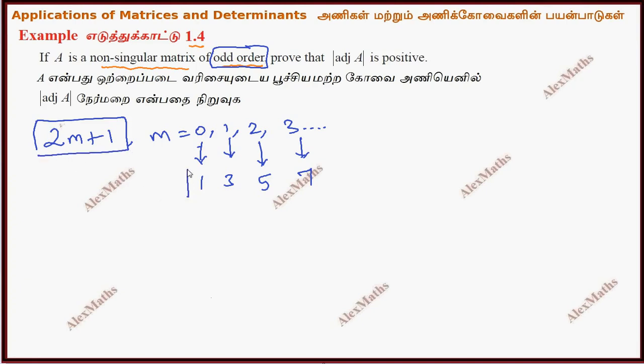So if we have a set of odd numbers, and the question is: will the adjoint of A be positive? We need to prove this.